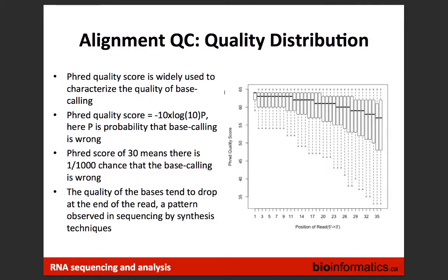Quality distribution: looking at each base position within a 35-base read, compiled across all reads in the library, using PHRED scores. PHRED score is negative log10 of the probability that base calling is wrong. A Q30 score means a one-in-a-thousand chance of error — Q30 is generally the threshold for acceptable quality. If you see bases below Q30, you can trim those bases, and many trimming tools let you specify a minimum Q-value rather than a fixed number of bases to trim.